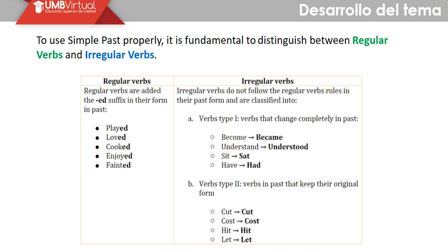To use simple past properly, it is important to establish if the verb is regular or irregular. For regular verbs, here are examples: play/played, laugh/laughed, cook/cooked, enjoy/enjoyed, faint/fainted. The pronunciation of the past ending changes slightly — it can resemble a D, a T, or an ID sound, depending on the preceding consonant.